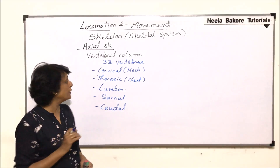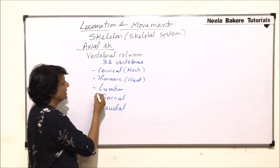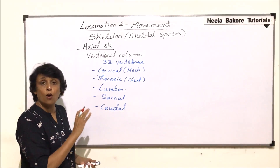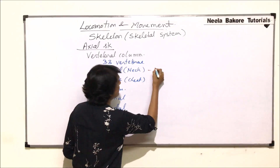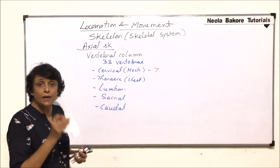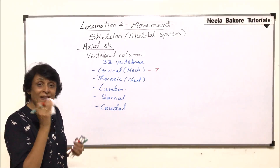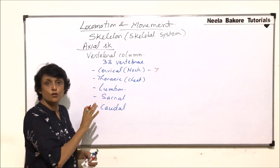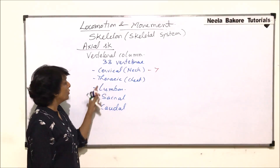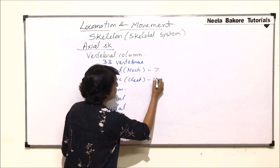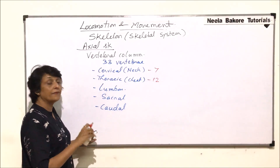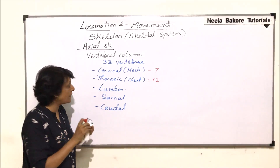The division of vertebrae is based on the parts of the body. In the cervical region — in all mammals — there are seven cervical vertebrae. In the thoracic region there are twelve vertebrae, and in the lumbar region there are five vertebrae.